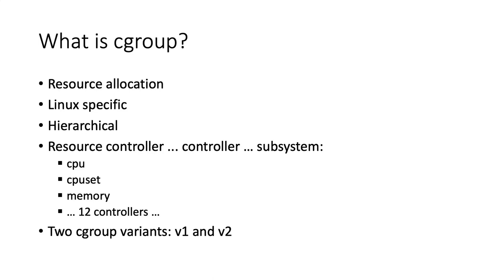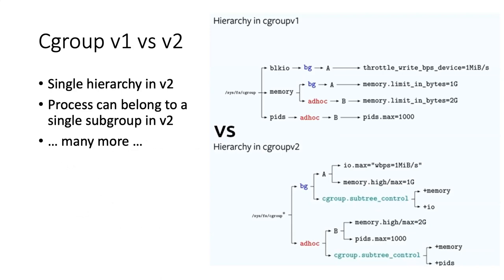There are also two variants: cgroup V1 and V2. Currently a user can choose which variant they want to use, but there are ongoing efforts to adopt cgroup V2 across Linux systems, which will probably take some time. V2 was developed to counter the problems encountered with cgroup V1. In V1, users are given a lot of flexibility, which leads to a lot of complexity, confusion, and it becomes very difficult to manage and account for system resources.